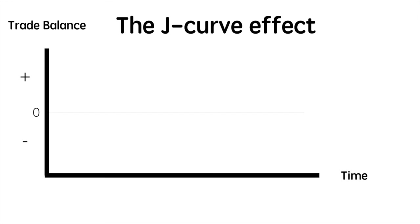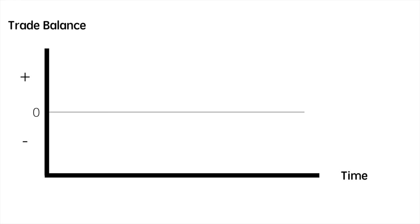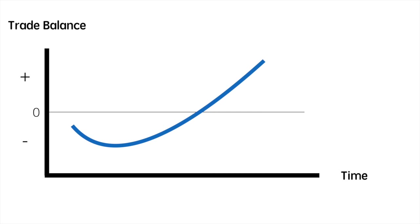The J-curve demonstrates the impact of a devaluation or depreciation on an economy's trade balance over a period of time, assuming that the Marshall-Lerner condition holds. The decrease in the value of the currency immediately causes imports to become more expensive and exports to become cheaper. The assumption is that behaviour does not change immediately but is more likely to over time. So immediately, a decrease in the value of the currency will cause the trade balance to worsen. As time passes, exports will start to rise as foreign buyers find our goods more price-competitive, and domestic consumers will switch away from now-expensive imports, so import expenditure should fall. The underlying theory behind the J-curve is that it takes time for a fall in the value of the currency to take effect — foreign buyers need time to respond, as do domestic consumers.